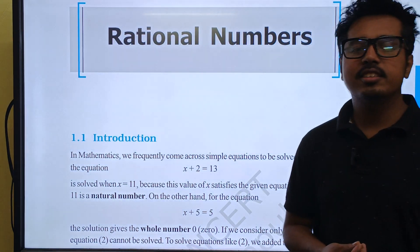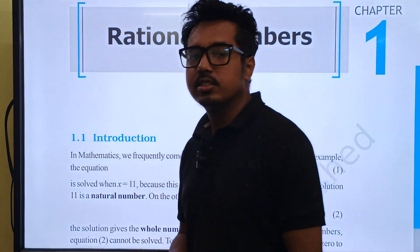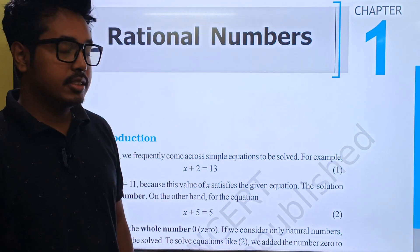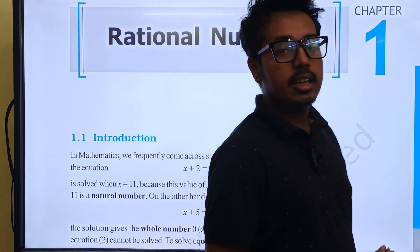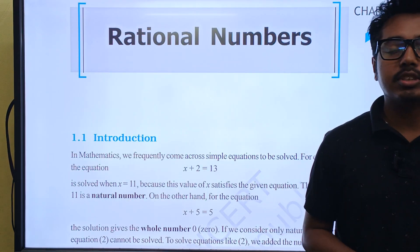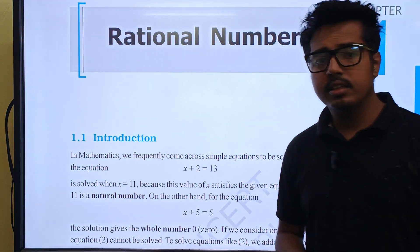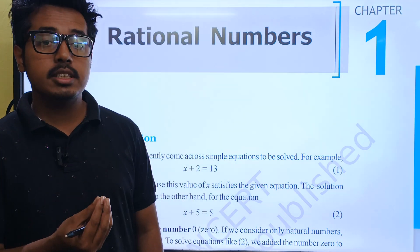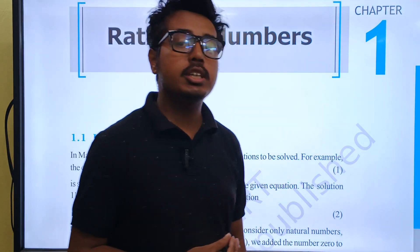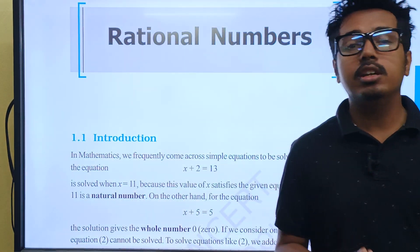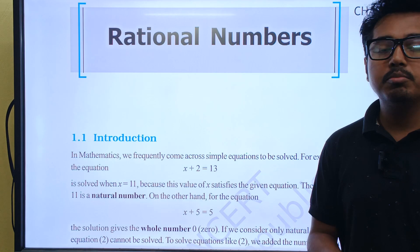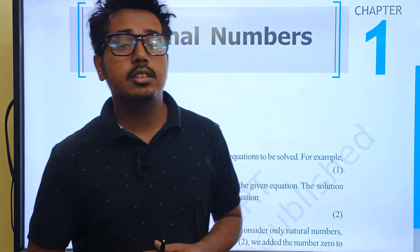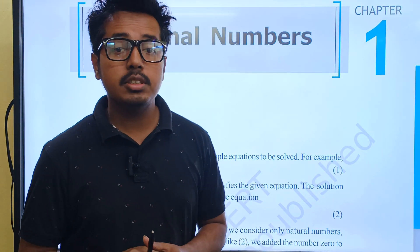Hello students, this is my first class of the chapter Rational Numbers, which is class 1 of the first chapter. Now what are the rational numbers? First of all, you need to understand the natural numbers, whole numbers and integers. What are these three types of numbers?